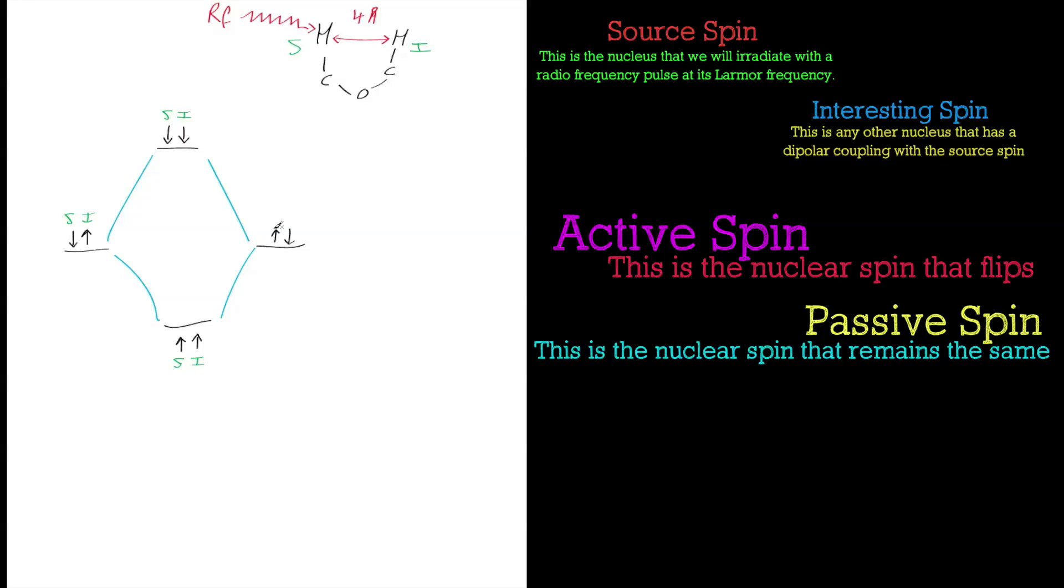The other possibility is that the source spin remains the same, stays in the spin up state, and the interesting spin flips. Now we need to think about the population of those particular states. Just for sake of argument and to make it easy to understand, we're going to imagine we've got something like ten molecules. If I take the source spin, there'll be a lot more in the ground state because that's the lowest energy.